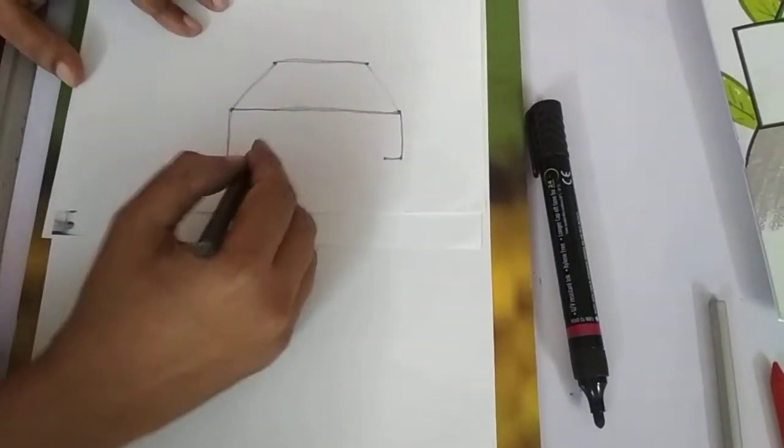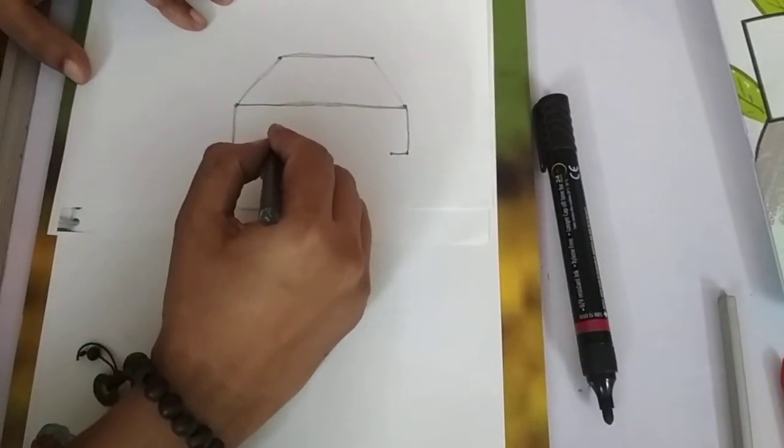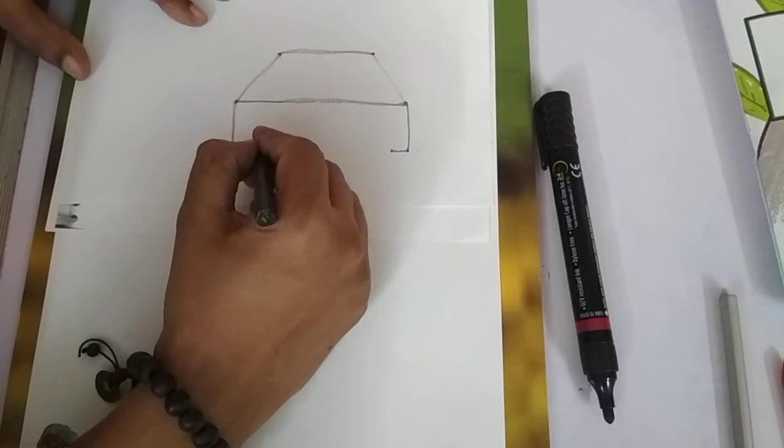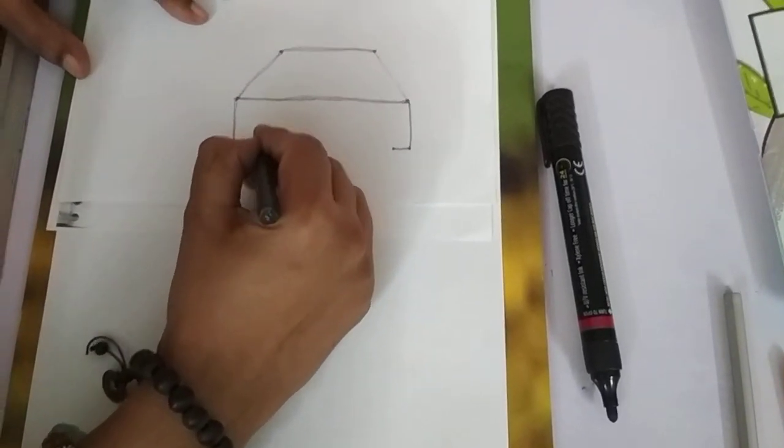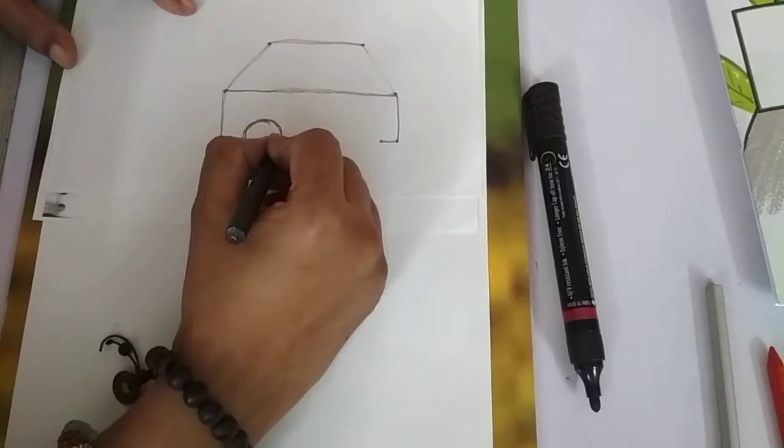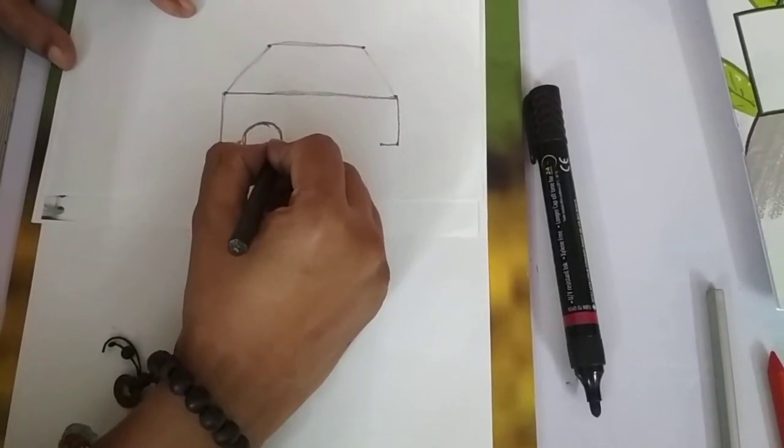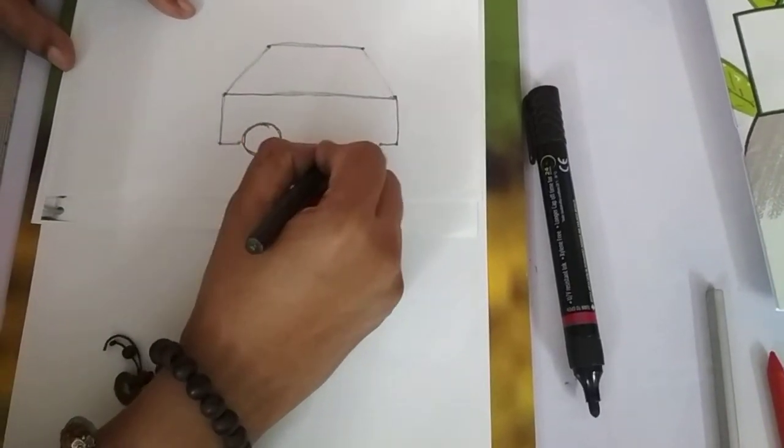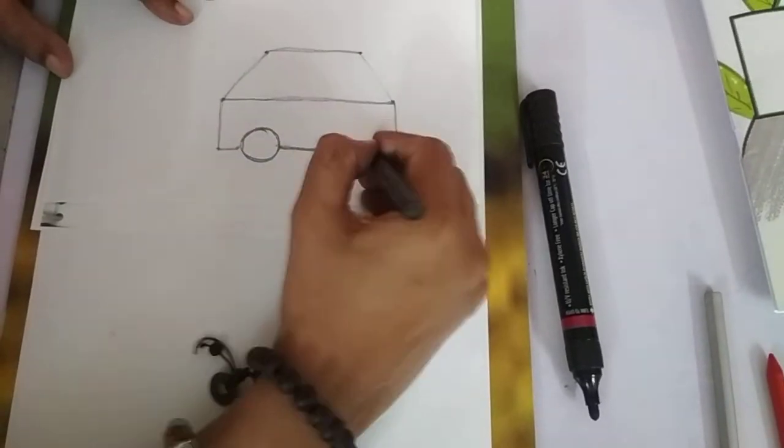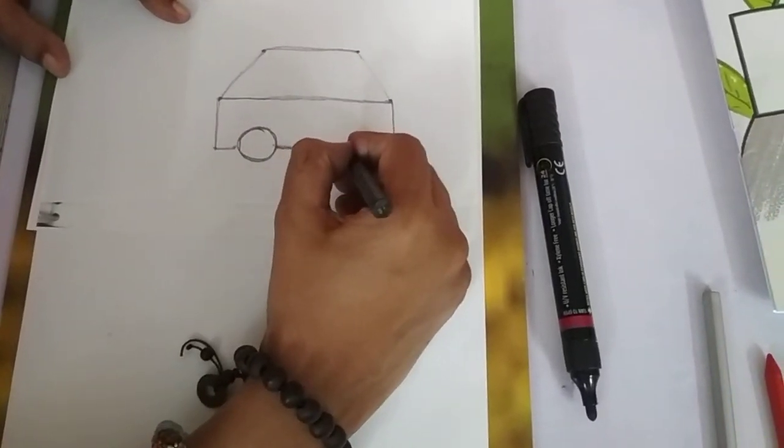Now, we are going to make wheels. Make a big circle. Again, sleep line. Again, make big circle.